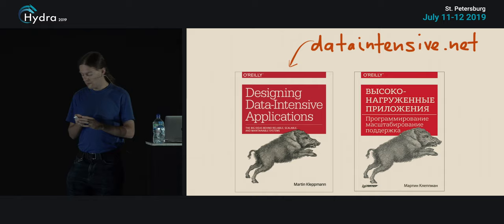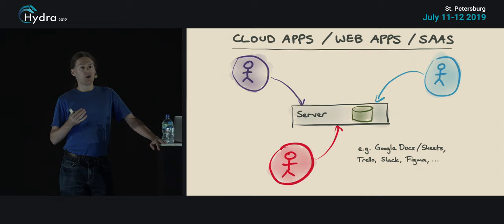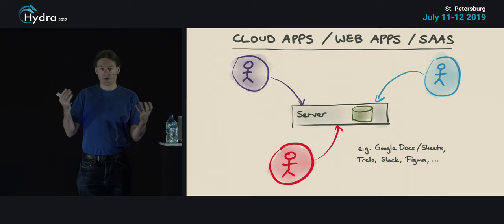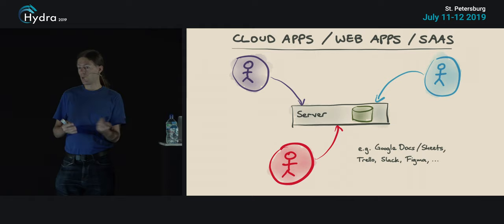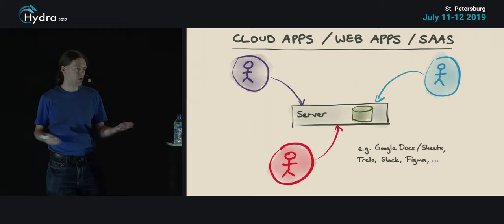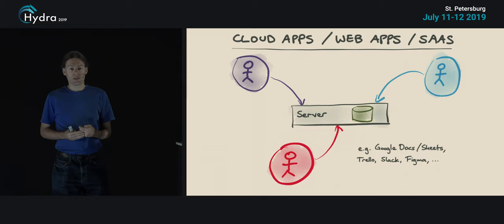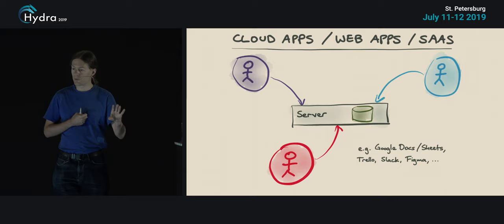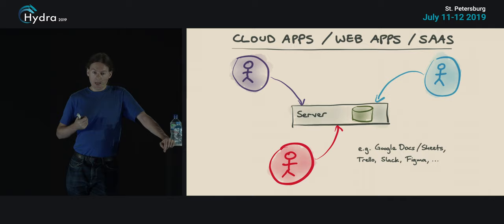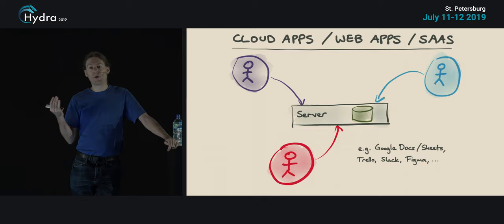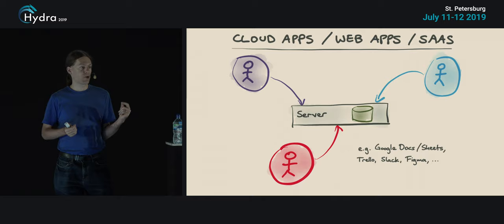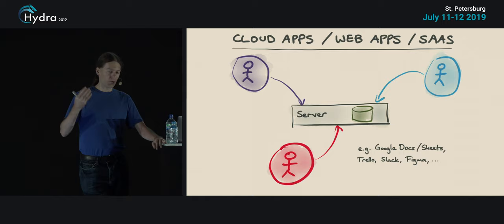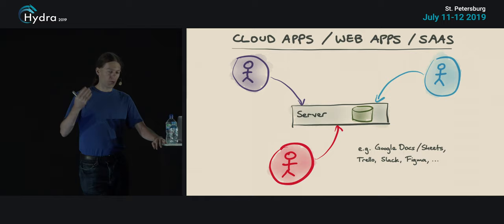I'd like to talk about collaboration in software. You're probably familiar with Google Docs, where several people can access and edit a document at the same time. I'd call this an example of cloud software — software as a service, or web apps. The general idea is that the primary copy of the data is stored on a server, in Google Docs' case somewhere in Google's data centers. You access it through a browser or mobile app, but the primary storage and most of the application logic are on the server, with fairly thin clients on user devices.